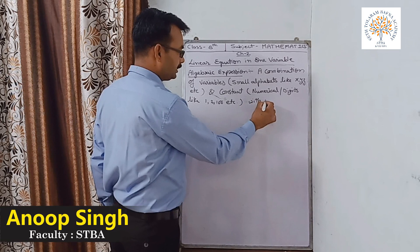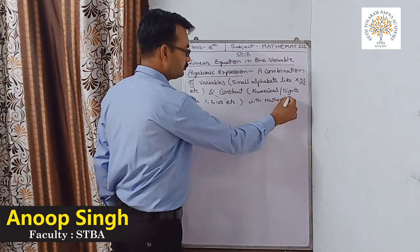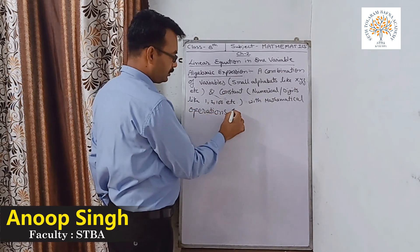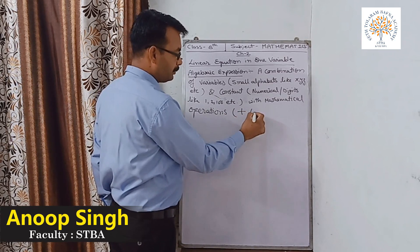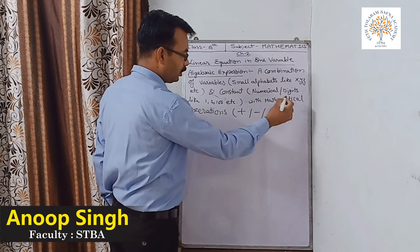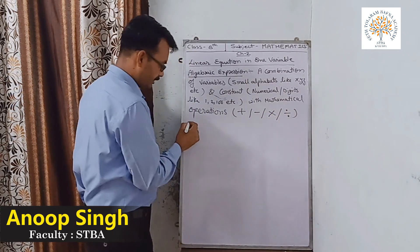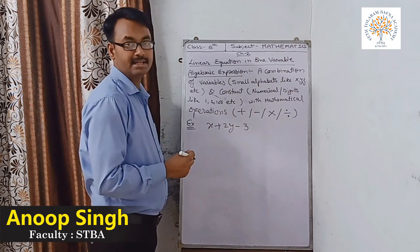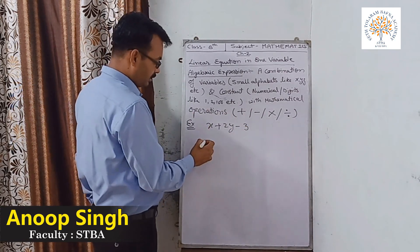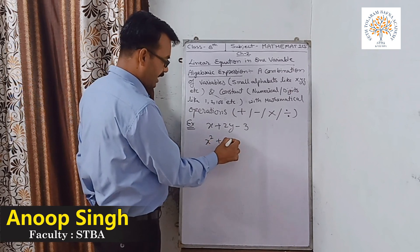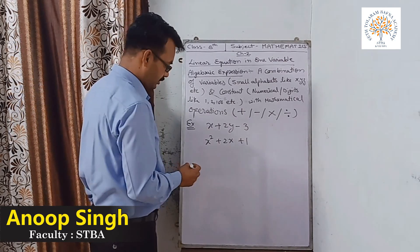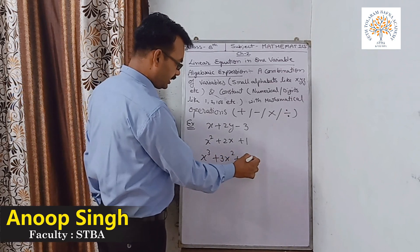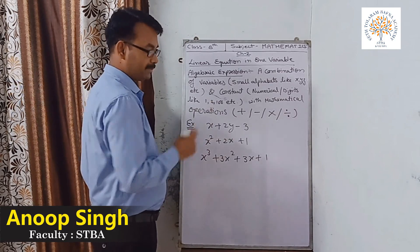With mathematical operations — mathematical operations means plus, minus, multiply, or divide. For example, X plus 2Y minus 3 — this is an algebraic expression. For example, X cube plus 3X square plus 3X plus 1 — this is also an algebraic expression.